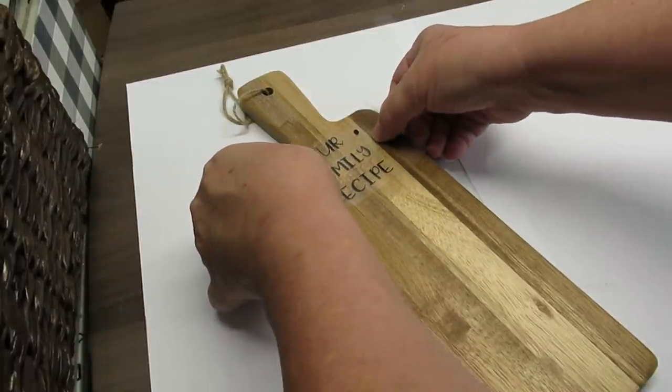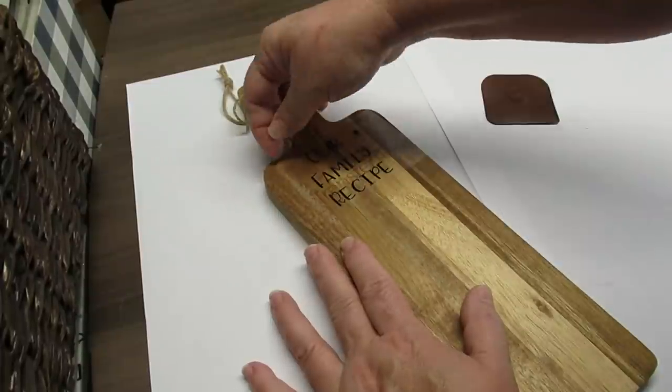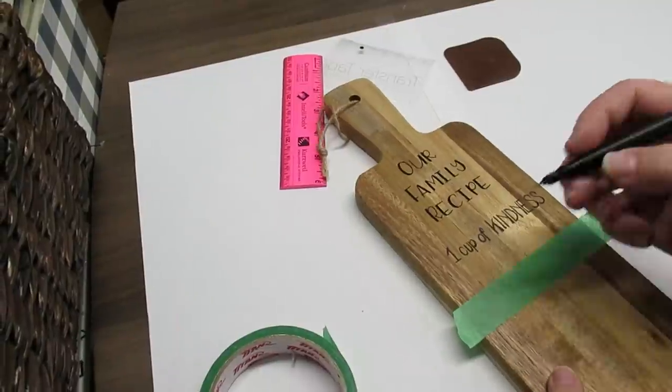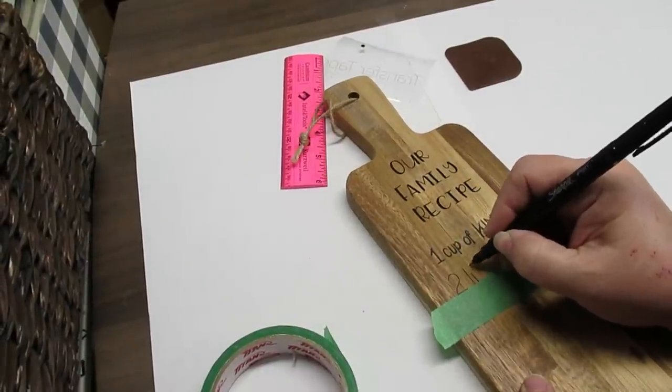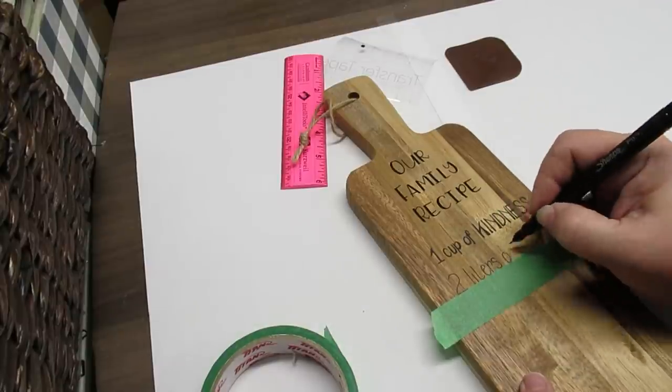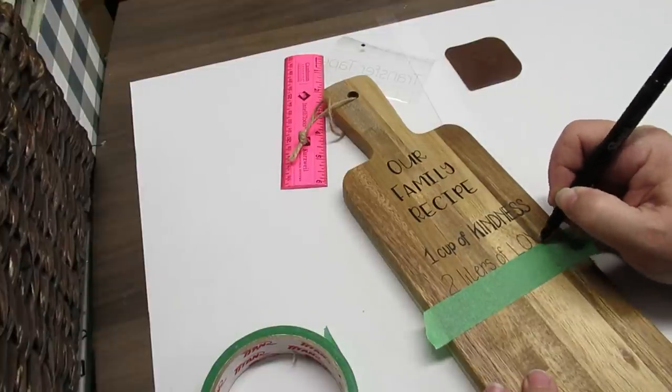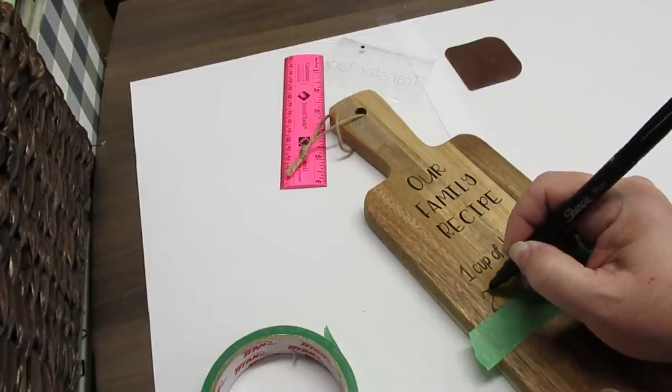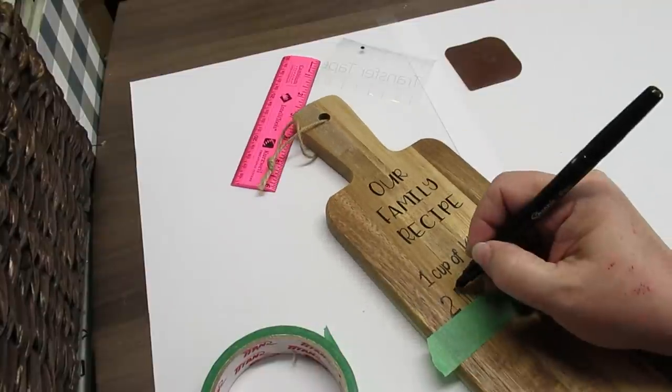I went to my Cricut Joy and I put together this 'Our Family Recipe' title and I'm just going to transfer that right to the top of the board. Using painters tape so I can have a straight line and this Sharpie pen, I'm going to write in the ingredients, making them just a little bit of a fun font, nothing too fancy, and I'm just going to continue all the way down the bottom of the board.